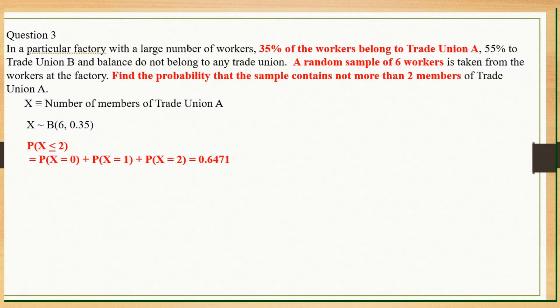Question 3. In a particular factory with a large number of workers, 35% belong to A, 55% B. A random sample of 6. This tells you it's binomial distribution. They've already given you the sample, the N. So you can see 6. In this question, they want you to calculate number of workers of trade union A. Therefore, your event will be number of members of trade union A, with an N of 6 and the P you follow for A. Can you see that? 35%. So they want not more than 2, less than or equals to 2. You just calculate. Shouldn't be a problem.